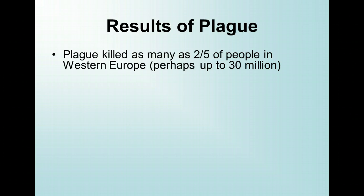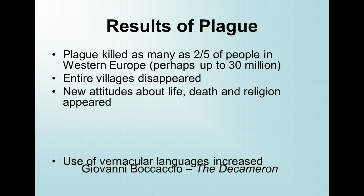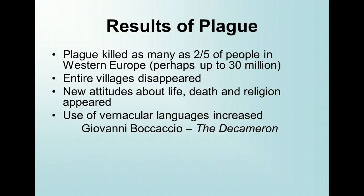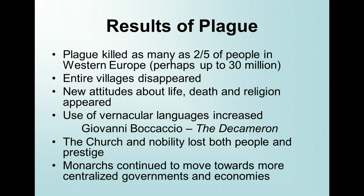Still another effect was to kindle a new cultural vigor in Europe, one in which natural languages rather than Latin were the vehicle of expression. Entire villages disappeared, and the use of vernacular languages increased. Giovanni Boccaccio's The Decameron was a collection of tales written in 1350, set in a country house where a group of noble young men and women in Florence have fled to escape the plague raging in the city. The Church and nobility lost both people and prestige, because nobody was safe from the plague. And finally, monarchs continued to move towards more centralized governments and economies, as we'll see most notably when we look at England, France, and Spain.